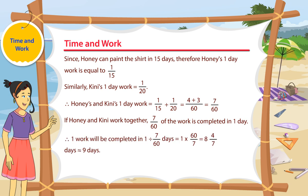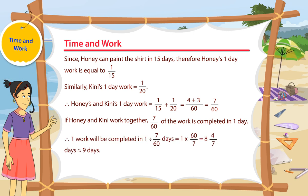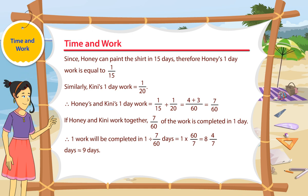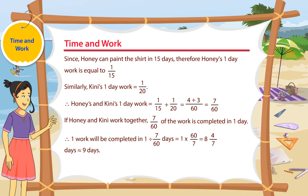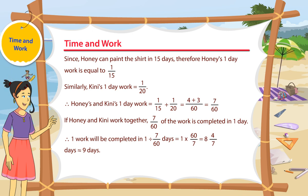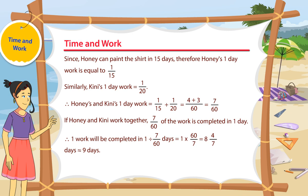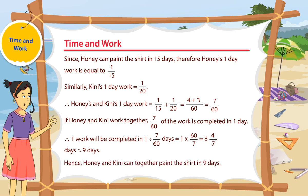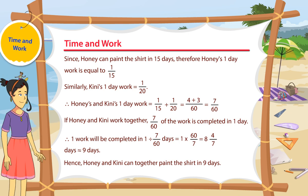Therefore, one work will be completed in 1 divided by 7 by 60 days, which is equal to 1 into 60 by 7, which is equal to 8 and 4 by 7 days, which is approximately 9 days. Hence, Honey and Kinney can together paint the shirt in 9 days.